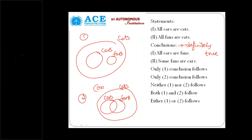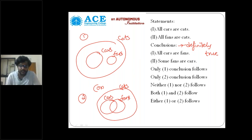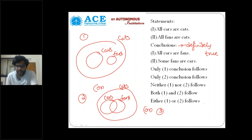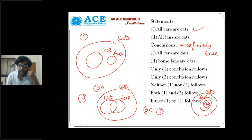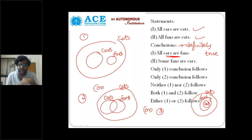This is one possible case, and second possible case is where all cars are cats and all fans are cats can overlap differently. A third possibility is also possible: cars, fans, and cats as separate sets where all cars are inside cats and all fans are inside cats. Now these three diagrams are all correct for the given statements. The conclusion 'all cars are fans' is true only in the third case, not in all cases. 'Some fans are cars' is correct only in the second case. So neither conclusion one nor conclusion two follows.